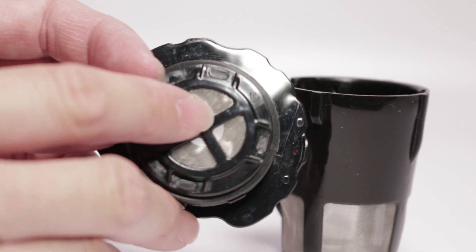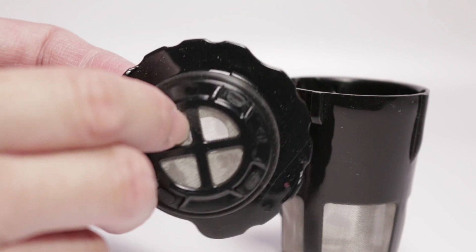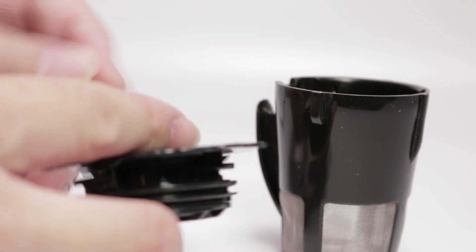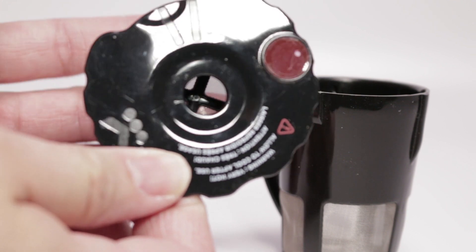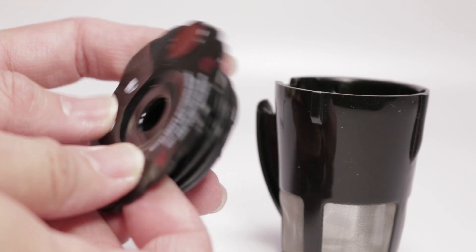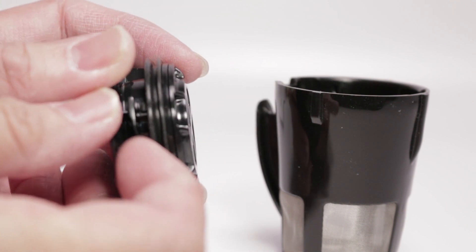On the top there's a mesh, and this is probably to prevent the coffee grounds from going into the hot water nozzle, which I heard often gets clogged. And there's also a rubber gasket seal.